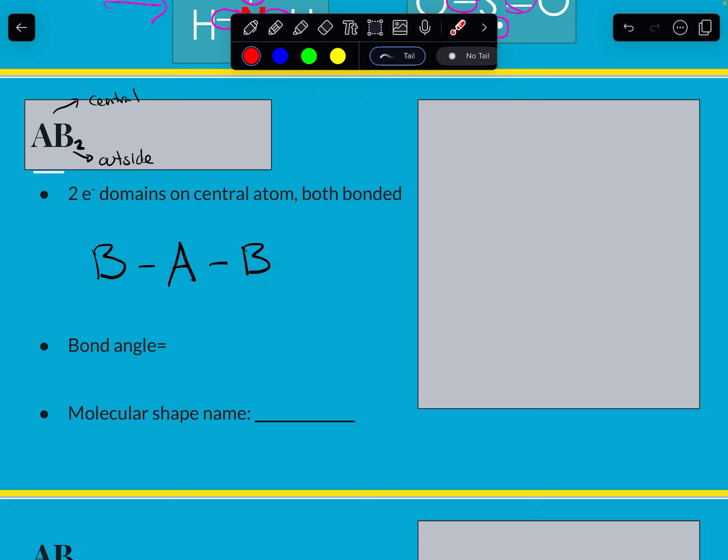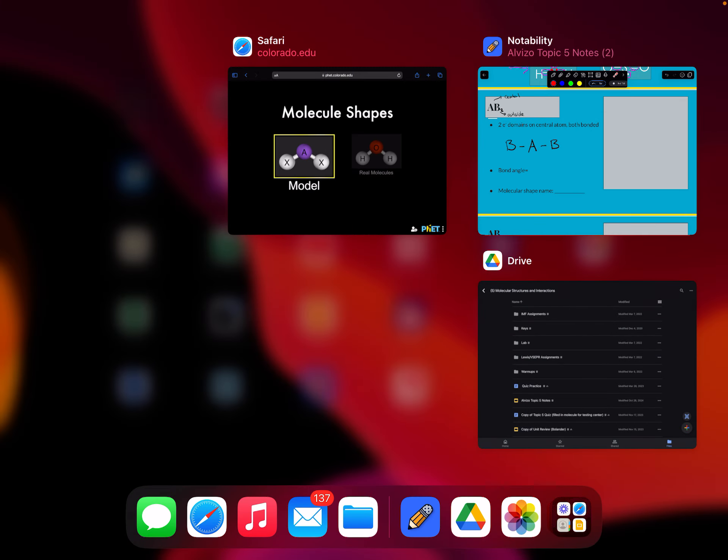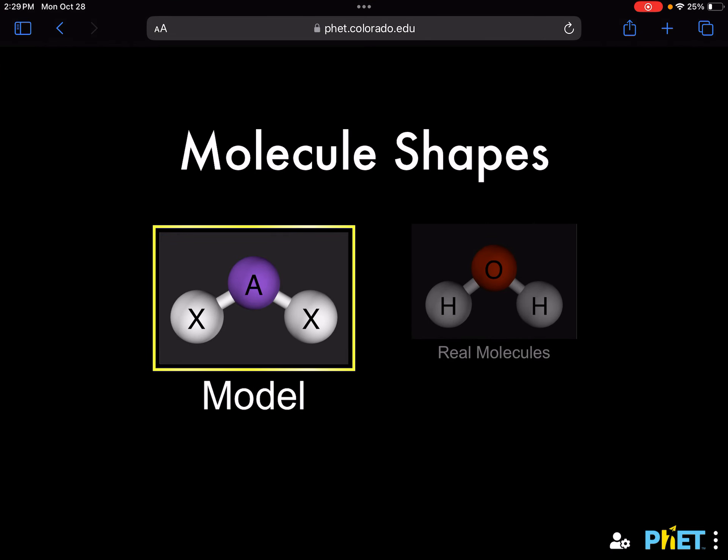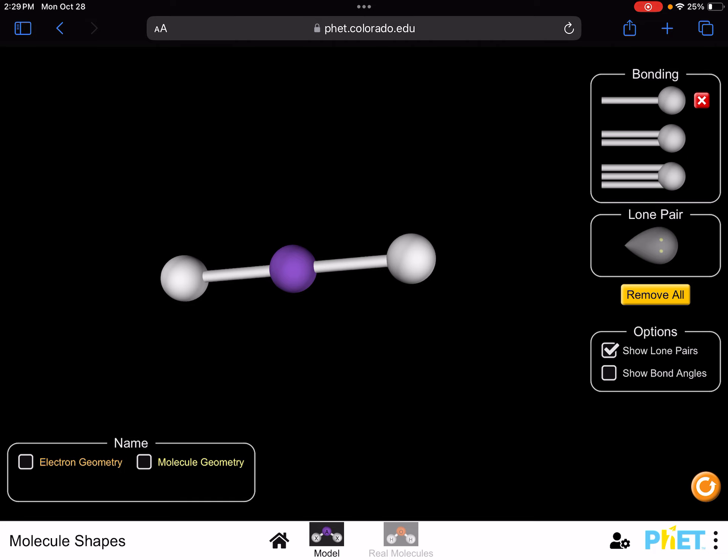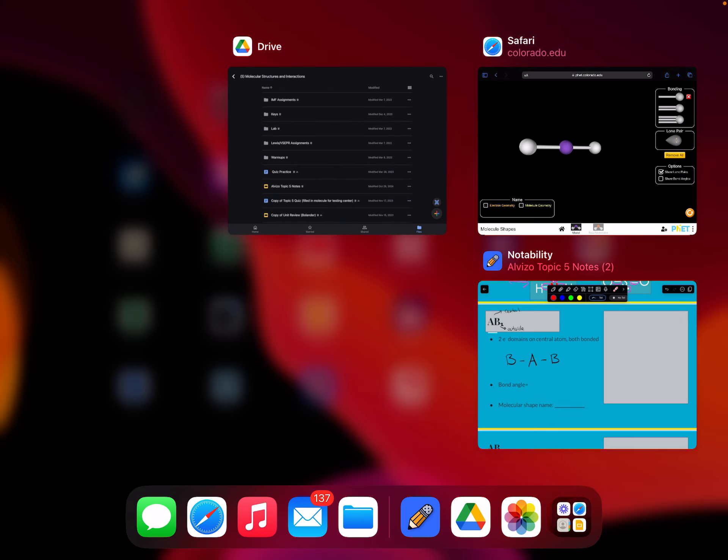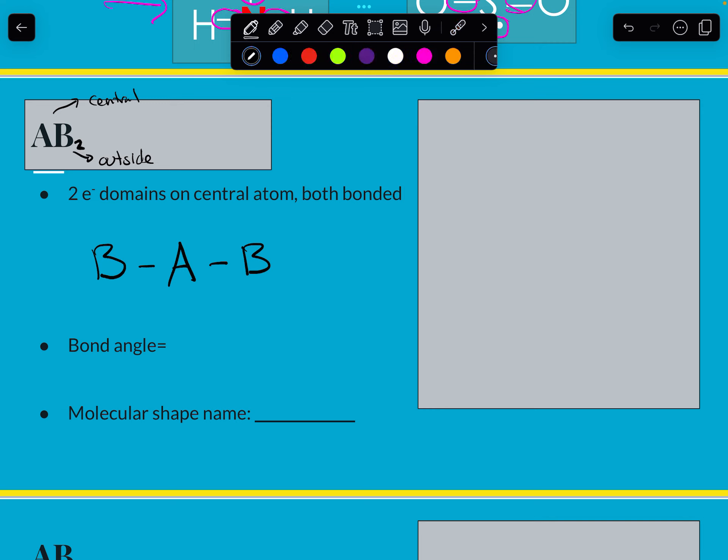All right. So the shape that this is going to take, let's go to our simulation here. If you have one thing in the middle and two things bonded to it, the shape it's going to take is always as it looks, just a straight line. And that is why scientists chose to name it linear.